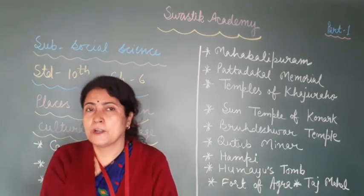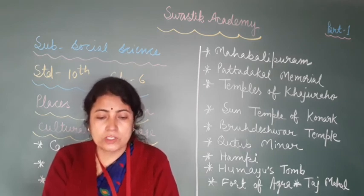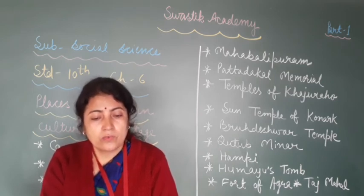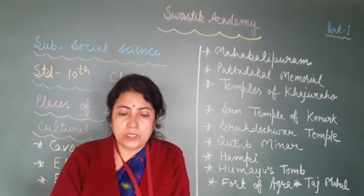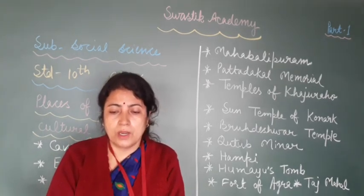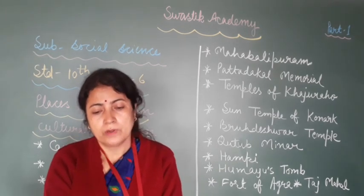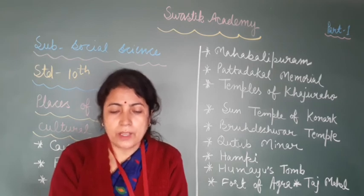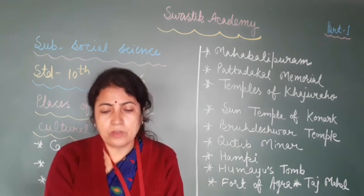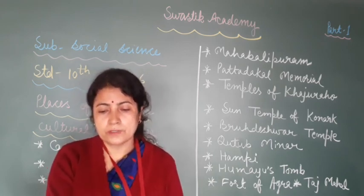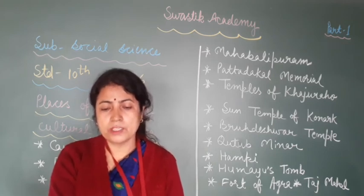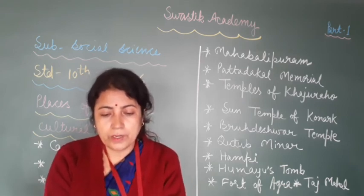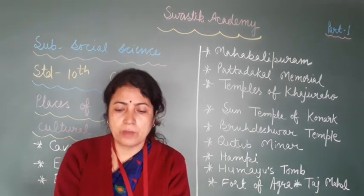Hampi is located on the banks of the Tungabhadra River in Bellary district of Karnataka. Hampi was the capital city of the Vijayanagar Kingdom. The rulers of Vijayanagar Kingdom were lovers of art. A peculiar type of architecture developed in Vijayanagar during their reigns. The main feature was to carve on huge and magnificent pillars.